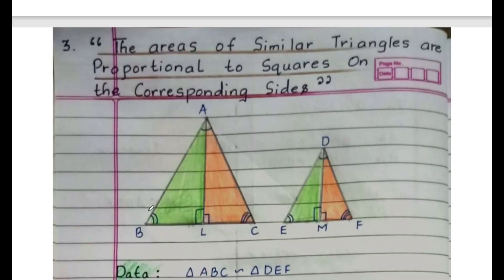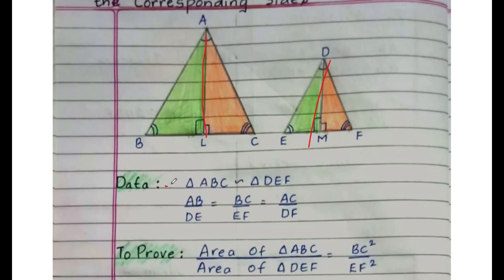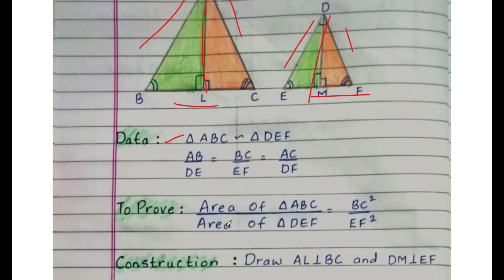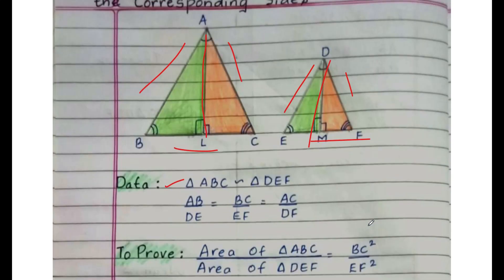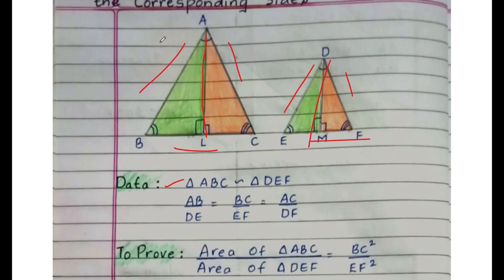Next, the important theorem: the areas of similar triangles are proportional to the squares of the corresponding sides. Draw two similar triangles ABC and DEF. Draw perpendiculars AL and DM. Data: triangle ABC is similar to triangle DEF, meaning corresponding sides are in proportion — AB/DE equals BC/EF equals AC/DF. To prove: area(ABC)/area(DEF) equals BC²/EF², which can also be AC²/DF² or AB²/DE².